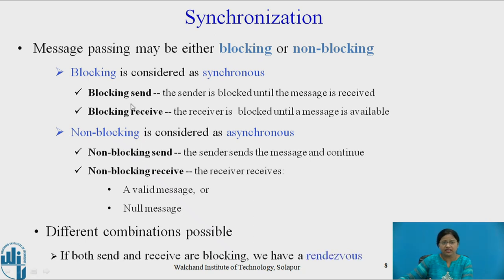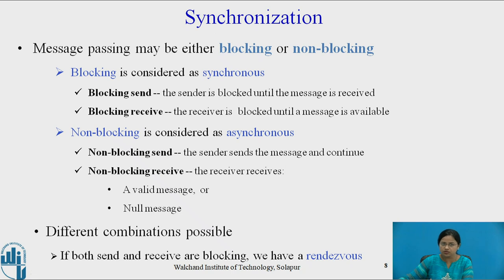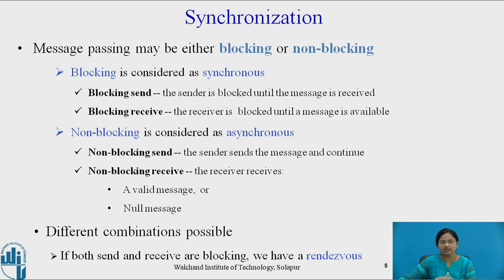If both sender and receiver are selected as blocking, the system may result in a rendezvous situation. For example, if the producer process is blocking and the consumer process is also blocking, the producer will wait until the consumer consumes an item, and the consumer will wait until the producer produces an item. Both may go into a waiting state, resulting in a rendezvous situation.